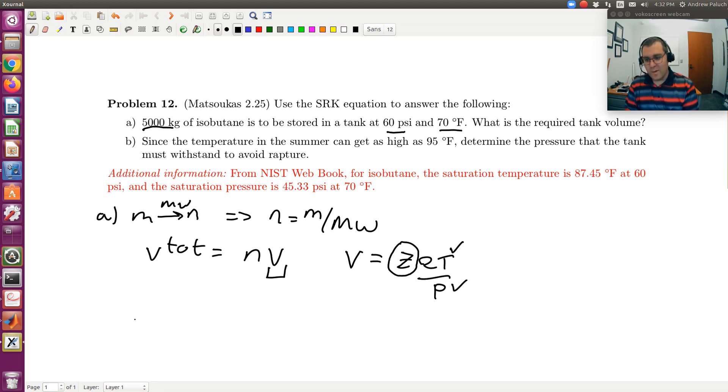So thinking about my cubic equation of state as a black box, my required inputs are going to be T, P, along with the parameters T_C, P_C, and omega. And out will come, in this case, Z and then V.